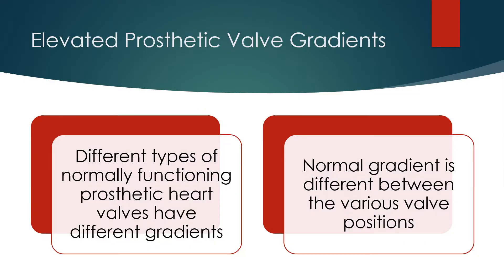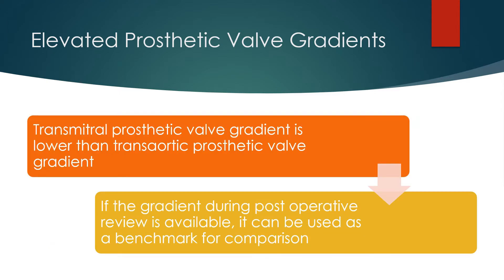Different types of normally functioning prosthetic heart valves have different gradients. Normal gradient is also different between the various valve positions. Transmitral prosthetic valve gradient is lower than trans-aortic prosthetic valve gradient. If the gradient during postoperative review is available, it can be used as a benchmark for comparison.